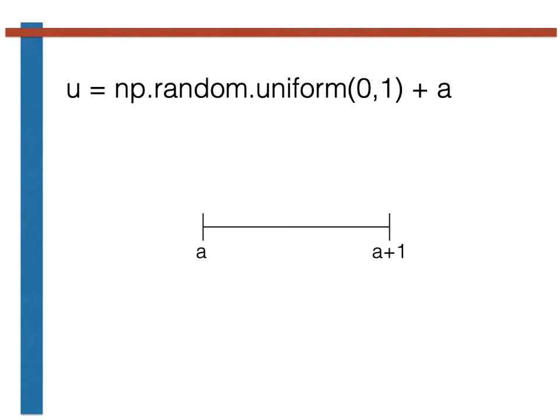u cannot be less than a, as the lowest value that we will get back when we call np.random.uniform is 0. Similarly, u cannot be greater than a plus 1, as the largest value that np.random.uniform will return is 1.